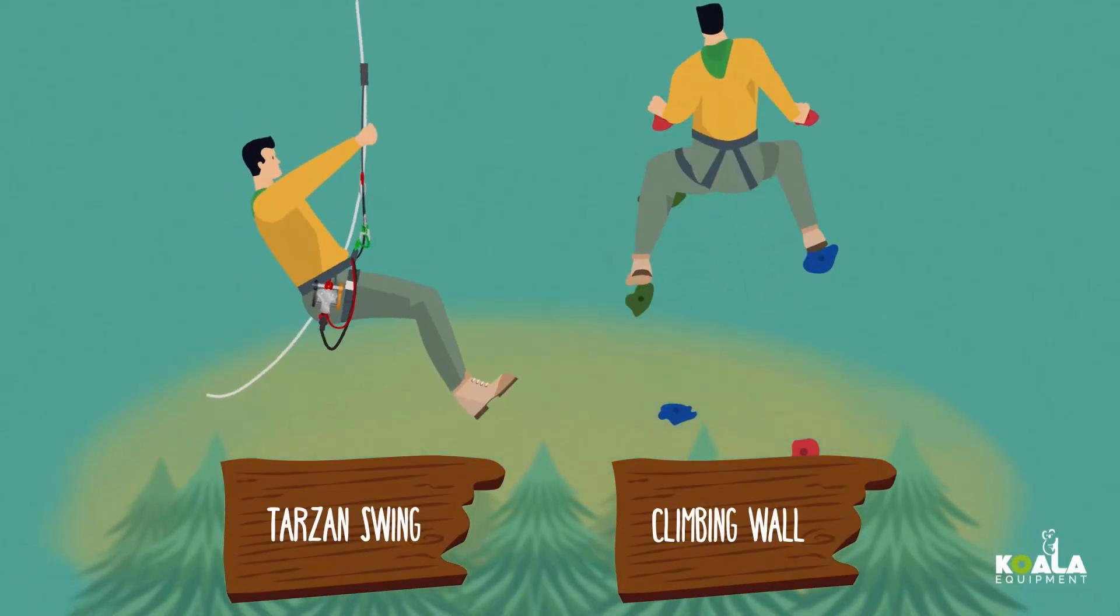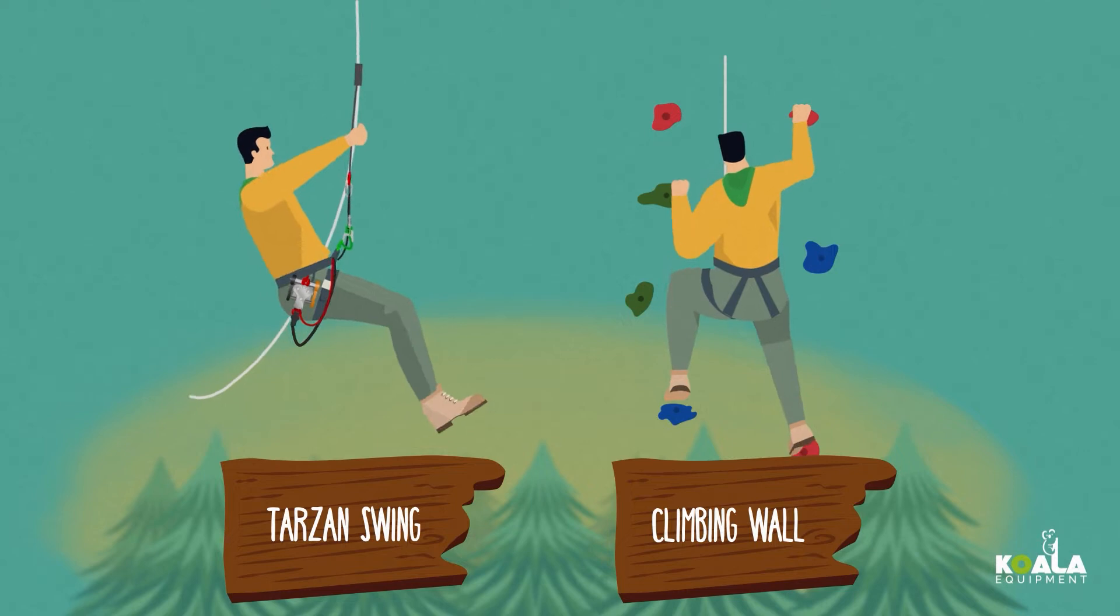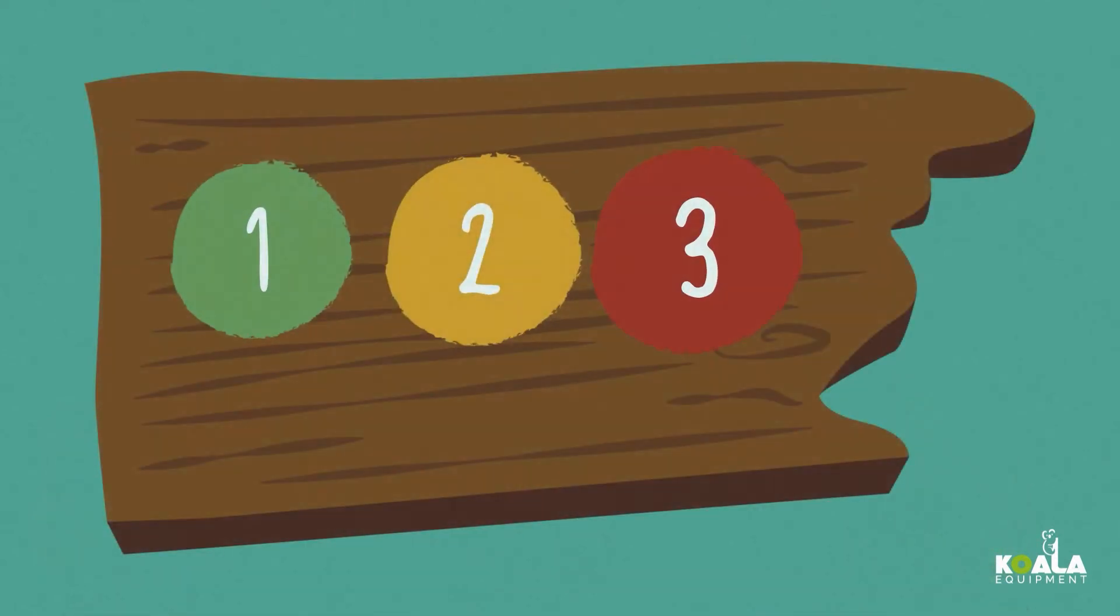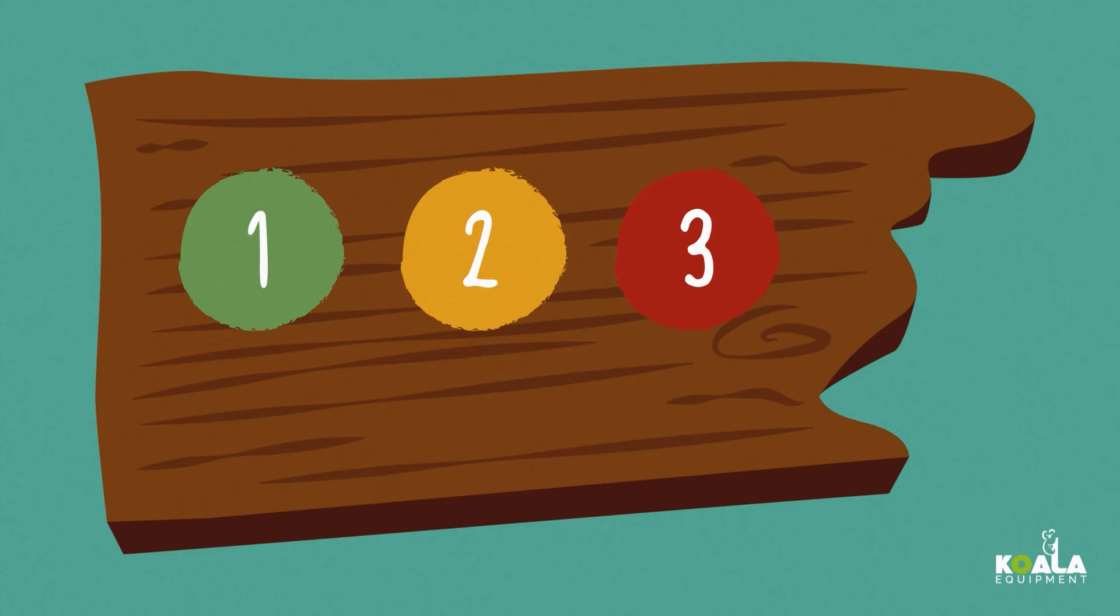From here on, you will come across some vertical activities such as the Tarzan swing or the climbing wall. Colored stickers with numbers are there to remind you of the order in which to handle the components.